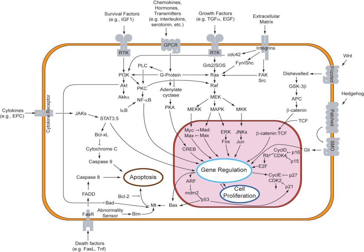A more complex signal transduction pathway involves changes of protein-protein interactions inside the cell, induced by an external signal. Many growth factors bind to receptors at the cell surface and stimulate cells to progress through the cell cycle and divide. Several of these receptors are kinases that start to phosphorylate themselves and other proteins when binding to a ligand. This phosphorylation can generate a binding site for a different protein and thus induce protein-protein interaction. The ligand binds to the receptor, which activates the receptor to phosphorylate itself; the phosphorylated receptor then binds to an adapter protein, coupling the signal to further downstream signaling processes. One of the signal transduction pathways that are activated is called the mitogen-activated protein kinase (MAPK) pathway.